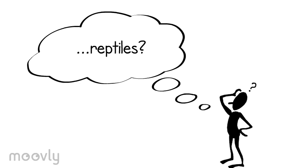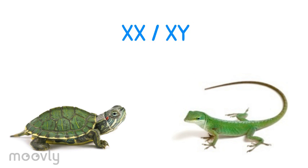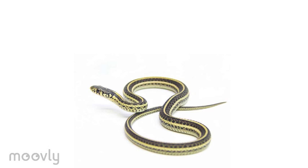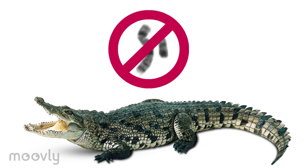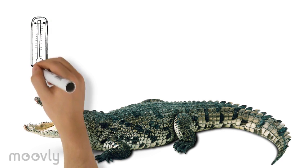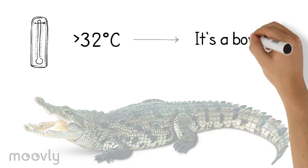Well, reptiles are fascinating subjects in the study of sex determination and sex chromosome evolution because they're so diverse. Turtles and lizards tend to have XY systems, snakes usually display female heterogamity, and alligators and crocodiles lack sex chromosomes altogether. Instead, their sex is determined by temperature during a critical period of embryonic development.